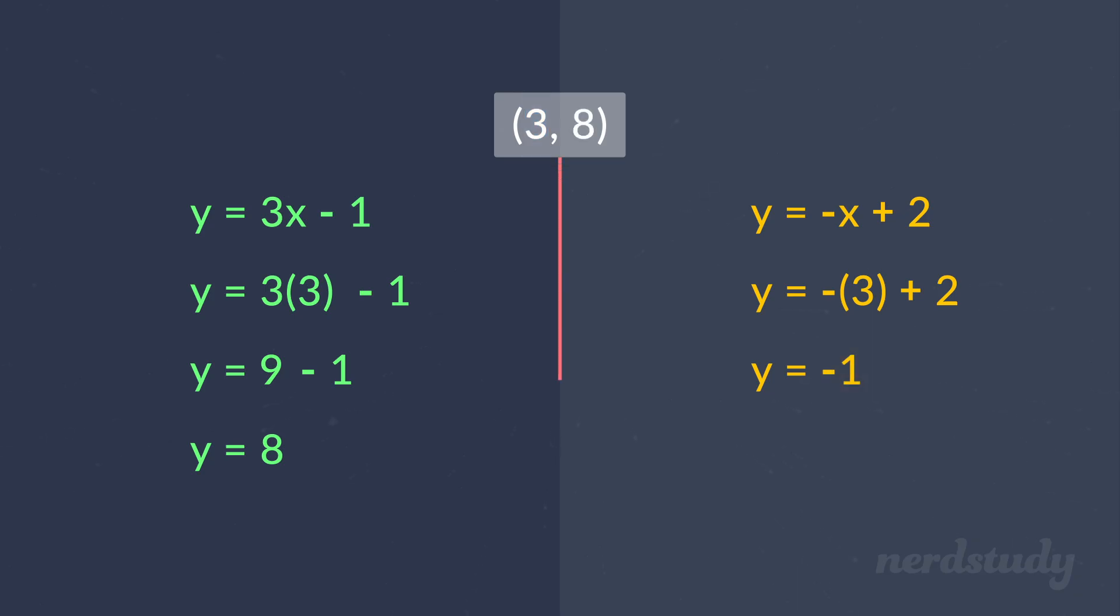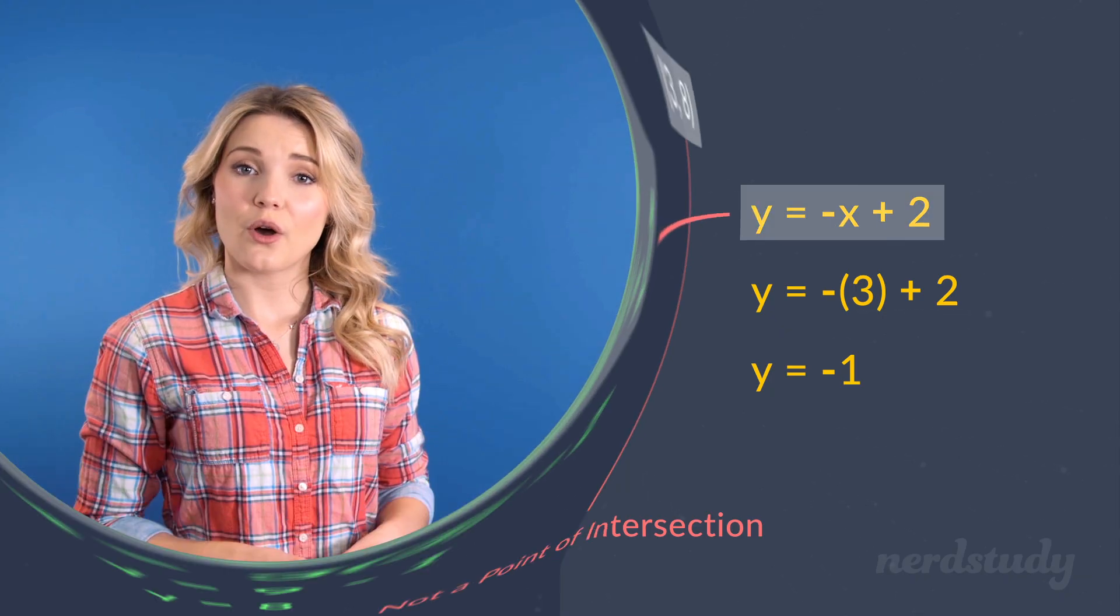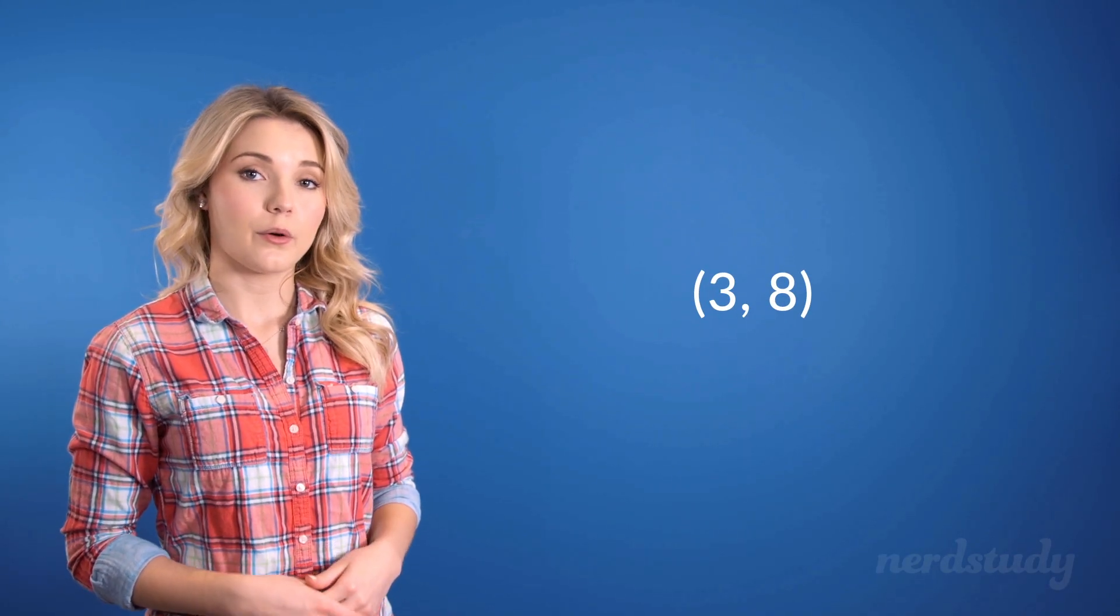Therefore, (3, 8) is not a point of intersection between these two lines. Awesome! So notice how we were given a point, and we were asked to find out if the point was a point of intersection for two different graphs.